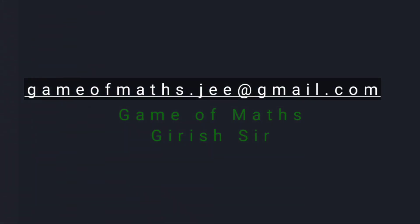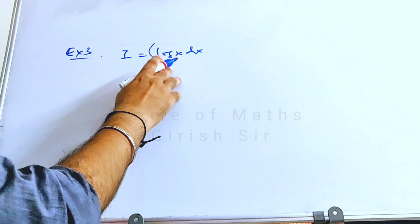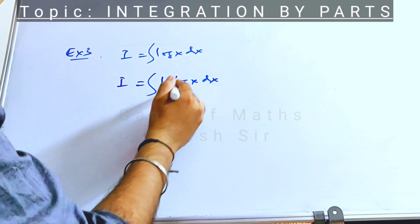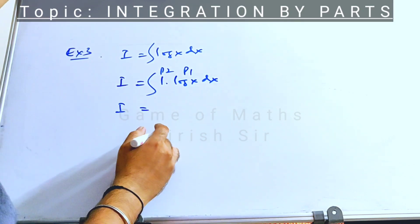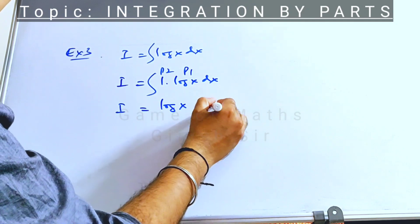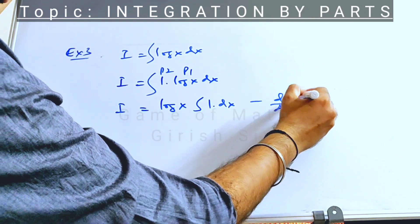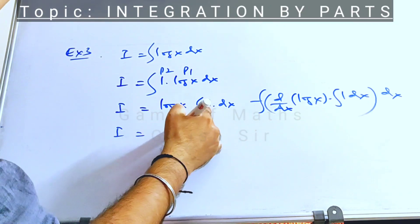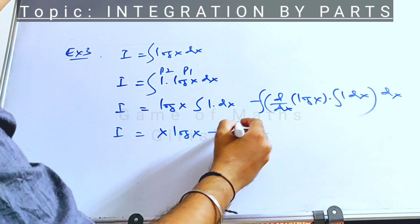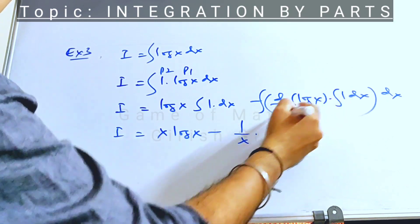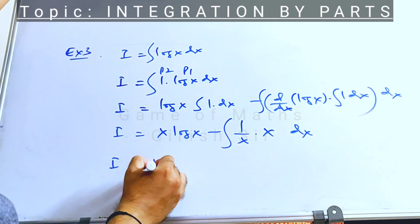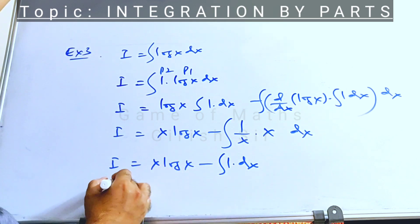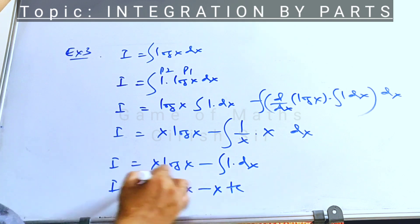Let's see another example — the integral of log x. This seems to be a single function. We write it as log x times 1, taking log x as P1 and 1 as P2. Using the integration by parts formula, we take P1 out and integrate only part two. The derivative of log x is 1 over x, and the integral of 1 is x. So we get x log x, and after simplification — x and x cancel — the integral of 1 is x. This is the final answer.